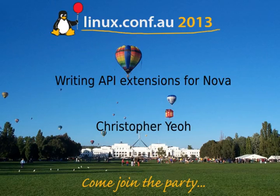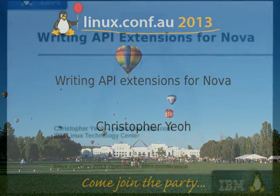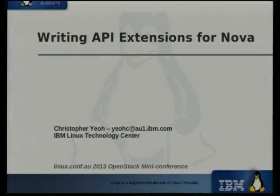I'm going to be talking about writing API extensions for Nova. Unlike all the other speakers today, I'm actually very new to the OpenStack project. I only started working on OpenStack about September or October last year, and didn't actually know much Python before working on OpenStack either. So this is a bit of a perspective from someone coming pretty new into the project.